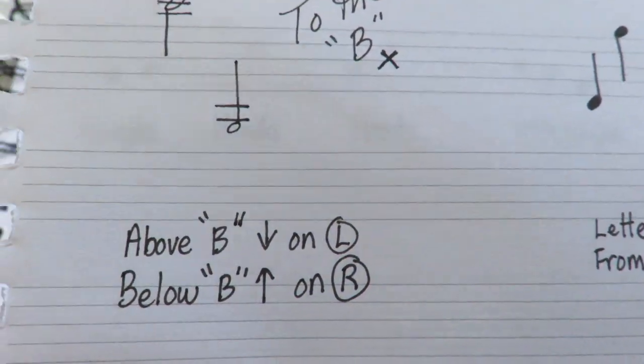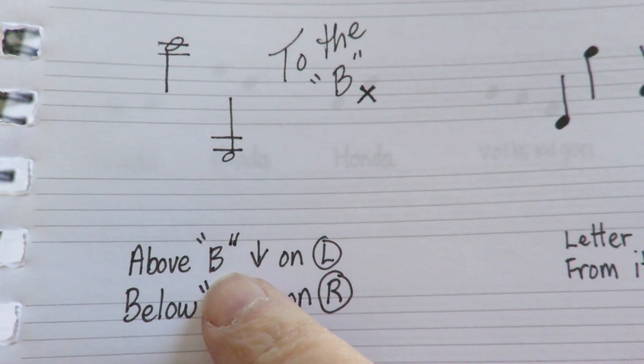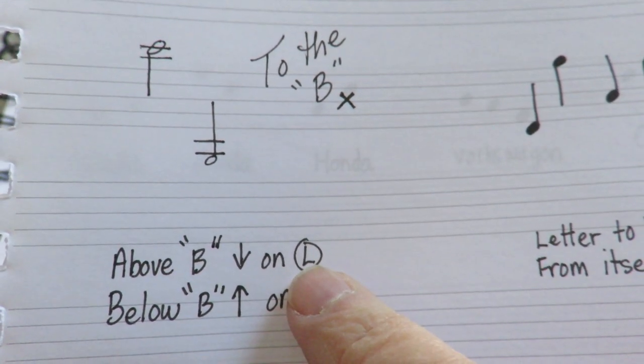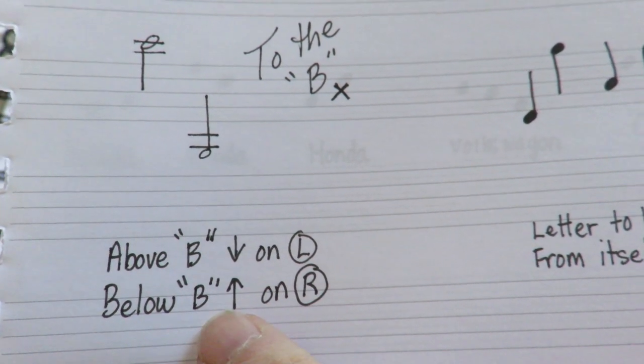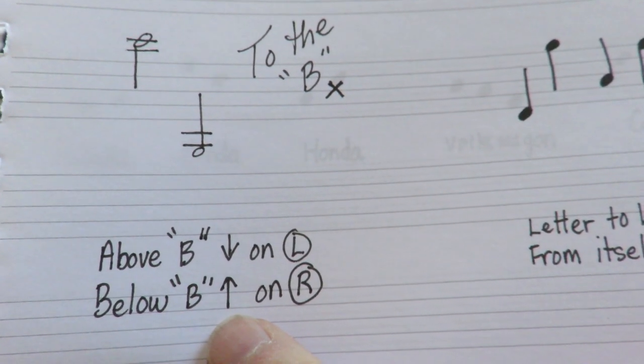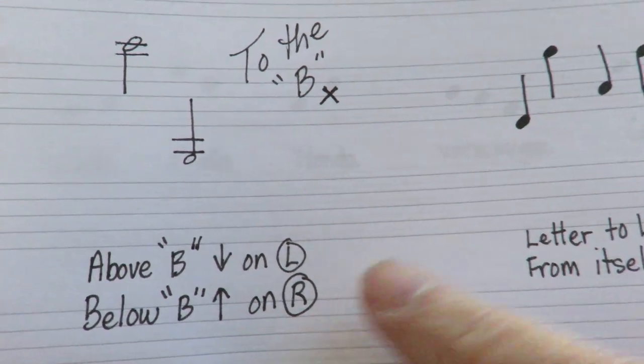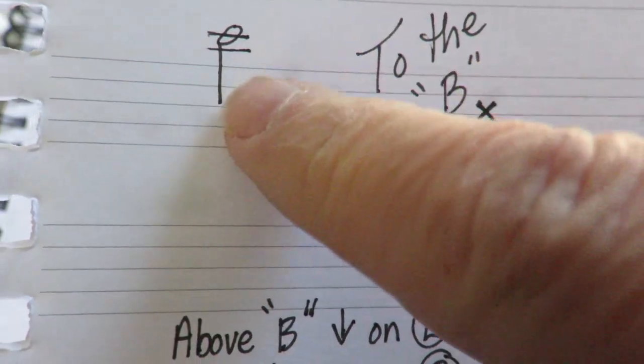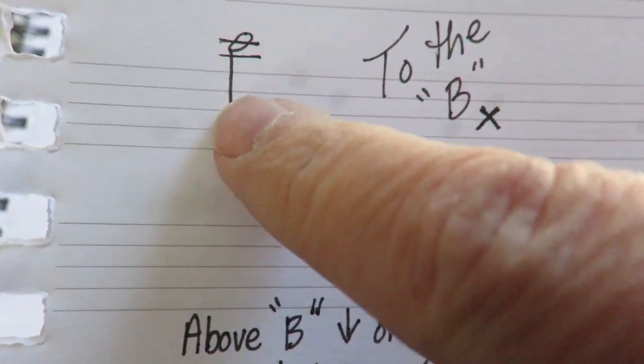Remember we learned that if the note is above the B line, your stem has to go down on the left side. If it's below the B line, it has to go upwards on the right side. So this ledger line note is above that B line. It goes down on the left.